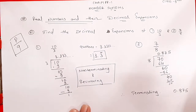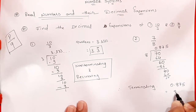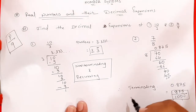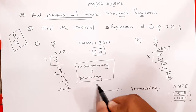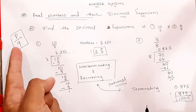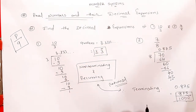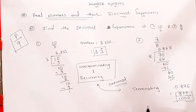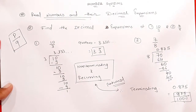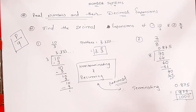Quotient 0.875 hai. Isko P by Q form mein likha jaaye toh 875 upon 1000. Yeh bhi P by Q form hai, isliye yeh bhi rational number hai. Toh do types ke decimal expansion hain: terminating decimal — jo end hoti hai — aur non-terminating and recurring decimal — jo chalta rehta hai aur repeat hota hai. Jitne numbers repeat hote hain unke upar bar lagaate hain.